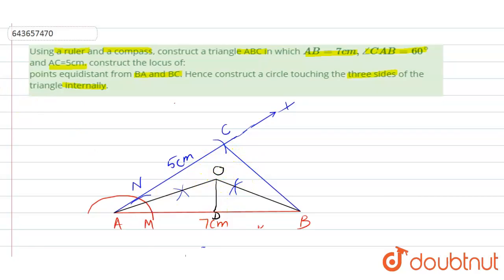Then with O as center and radius OD, draw a circle like this. See, with O as center and radius OD, draw circle with the help of compass. This is your required circle touching the three sides of the triangle internally.